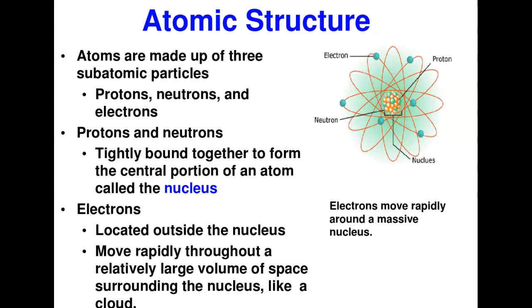The modern structure of an atom is that it is made up of three subatomic particles: the protons, the neutrons, and the electrons. At one point in time, there was the understanding that the atom cannot be broken down further into any particle, but with better equipment and the sophistication of science, we've been able to understand that the atom actually contains these three smaller particles.